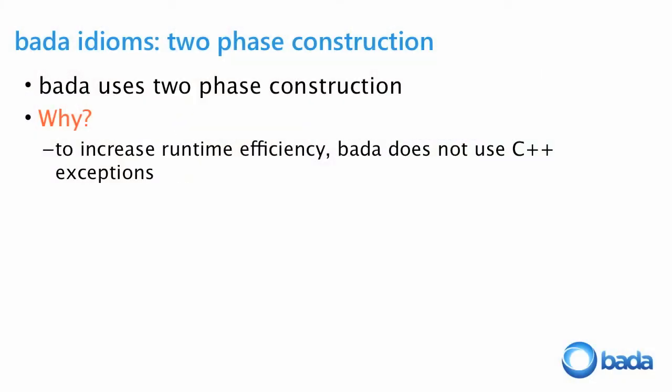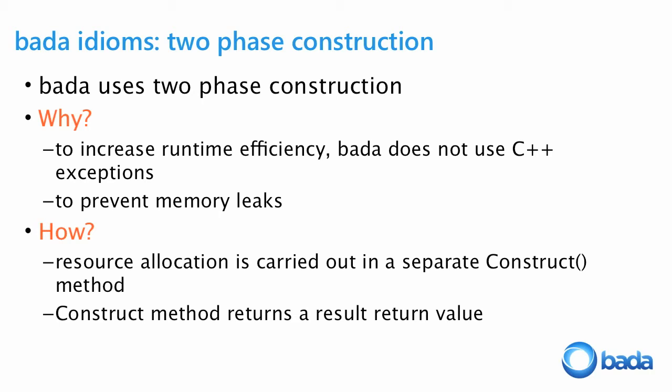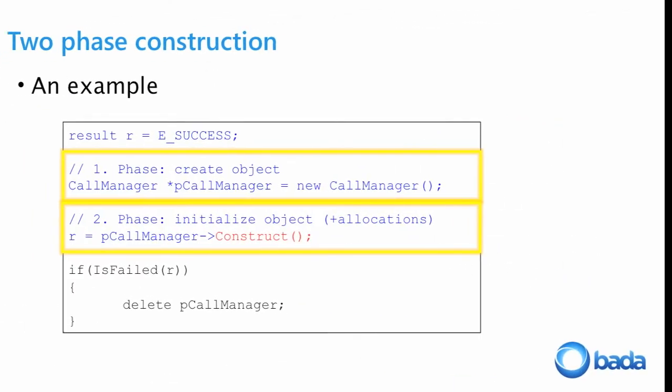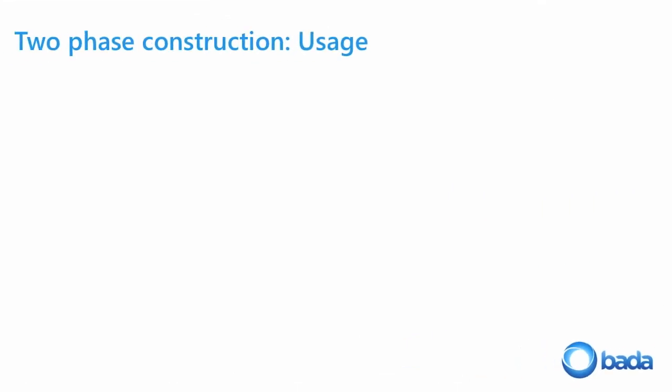We use two-phase construction to prevent memory leaks. We have a separate construct method that returns a result. If we exit a constructor that allocates data members like arrays without exception support, we have no way of knowing whether allocation succeeded or failed — leading to memory leaks. On a constrained device like a mobile phone, that's a serious problem. Two-phase construction is how we resolve it.